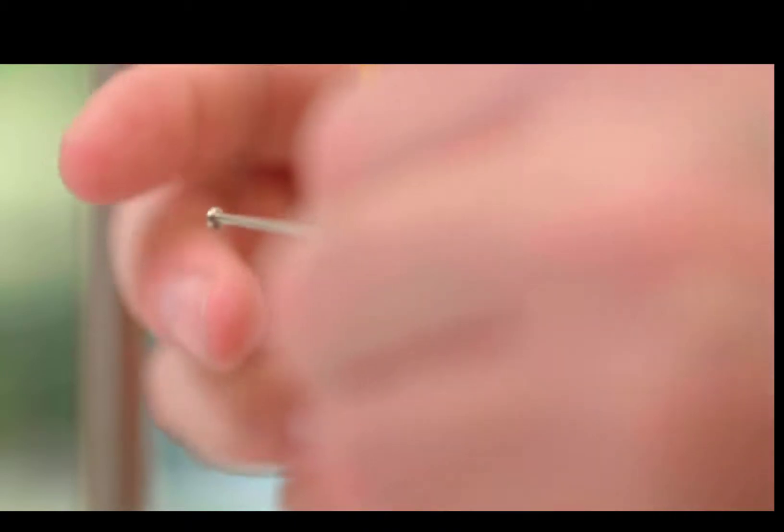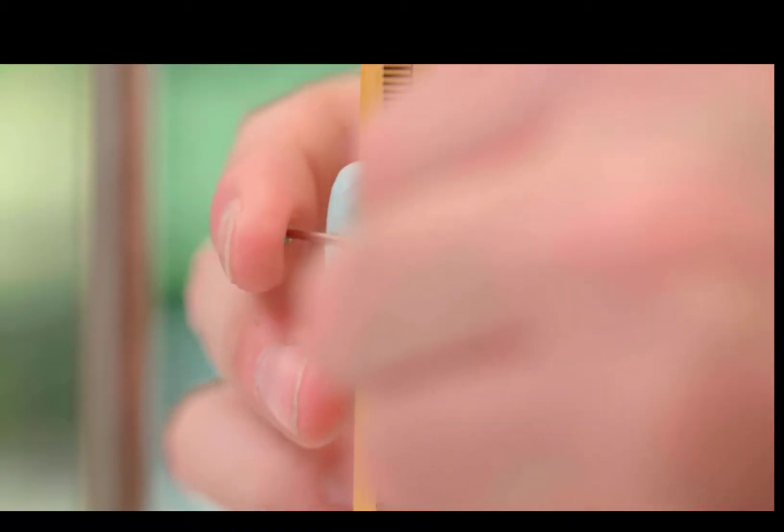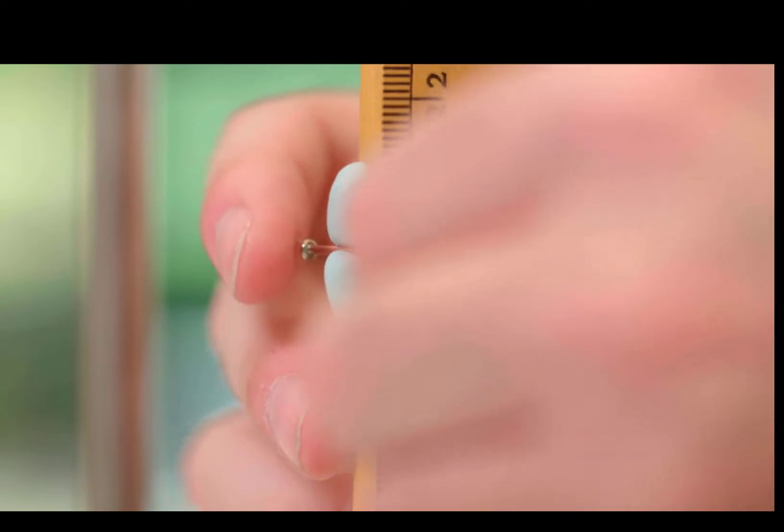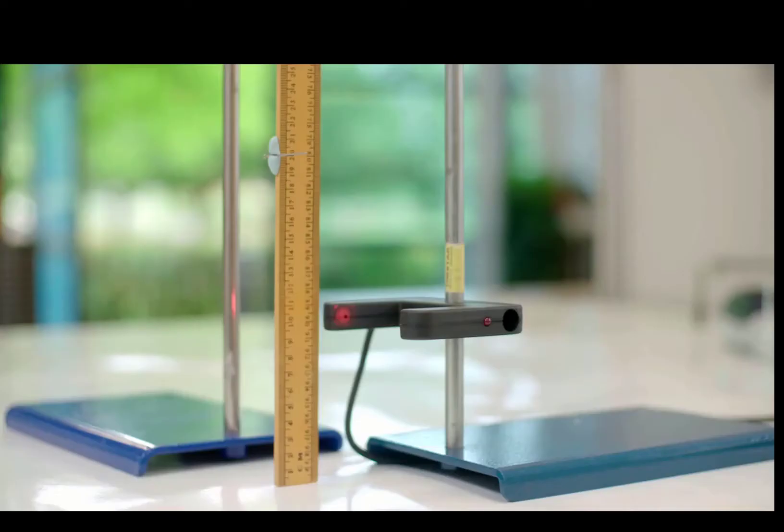The pin is attached at 0.2 meters, 20 centimeters, horizontally with the tabletop using sticky tack. The middle line of the card is aligned with the pin, so to minimize the rotation and air resistance as it falls.